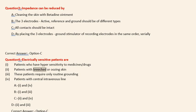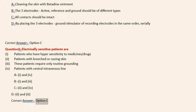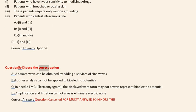Question 4: Electrically sensitive patients are: (i) Patients who have hypersensitivity to medicines/drugs. (ii) Patients with breached or oozing skin. (iii) These patients require only routine grounding. (iv) Patients with central intravenous line. Options: A. i and iv, B. i and iii, C. ii and iv, D. ii and iii. Correct answer: Option C.